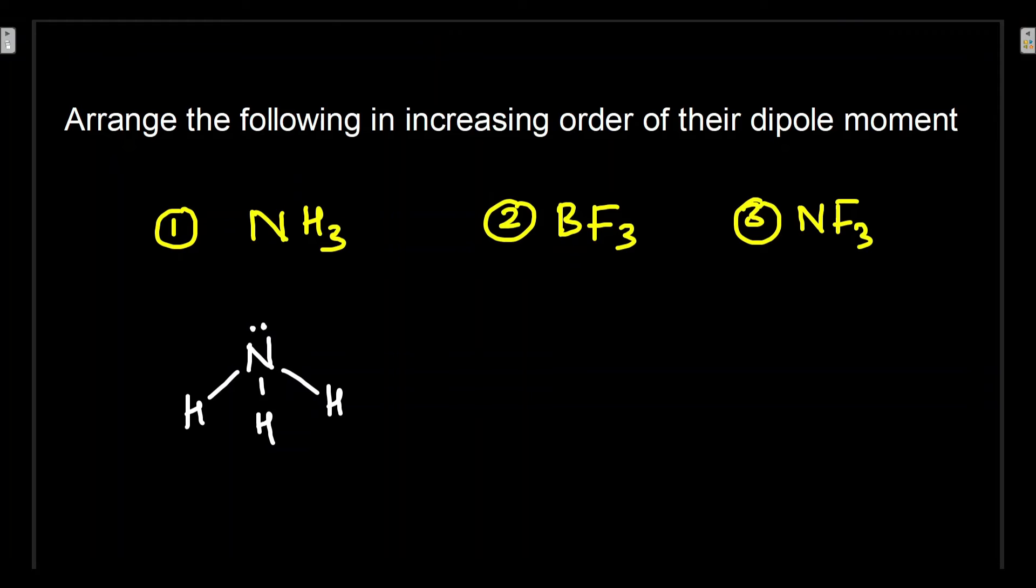BF3: boron has no lone pair, so it will have a trigonal planar at 120 degree angle. NF3: again there is a lone pair, so it pushes the bonds to come together.